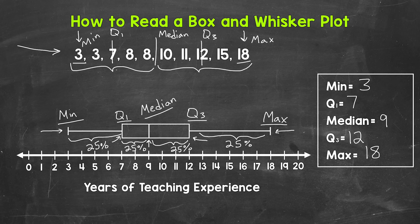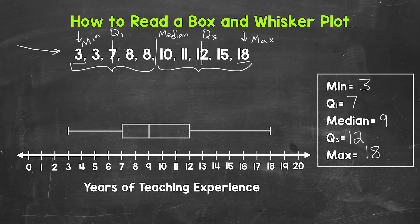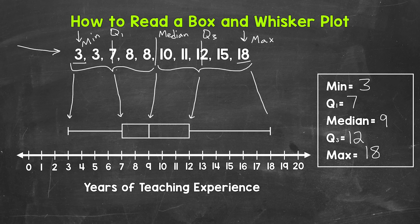For one final recap, with all the labeling cleared away so it's more clear what we're looking at: we have the minimum, which is three, right here. Then the first quartile, which is seven, right here. Then the median, which is nine, right here. Then the third quartile, which is 12, right here. And lastly the maximum, which is 18, right here.